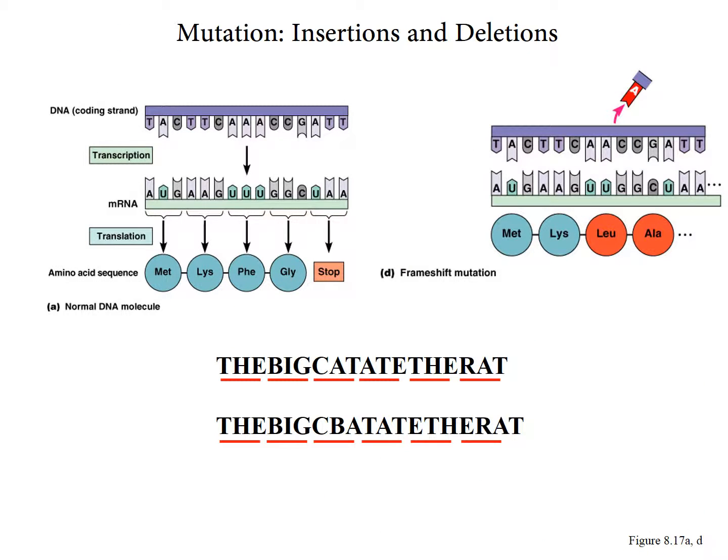These are examples of insertions and deletions. Consider the phrase 'the big cat at the rat.' If a letter B is inserted between 'c' and 'a' in 'cat,' the reading is now disrupted — you get 'the big cbat' and the rest of the message shifts. Because the information is being read three bases at a time, the insertion shifts the entire reading frame downstream, illustrating the likely effect of a frame shift mutation.